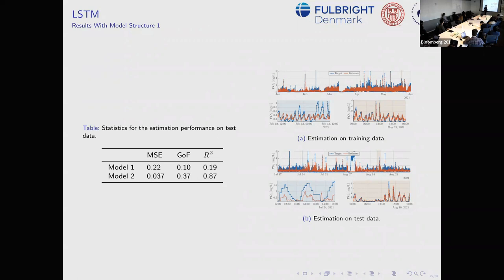Looking at test data, we see a similar story — there are areas where it doesn't perform well, and this is kind of proof that it's really hard to predict. You can't just say that in July it will always be the same; there are many factors beyond time of year. Question from audience: how did you split the data? The first portion was training and the last was test.